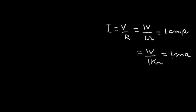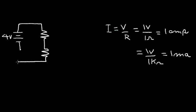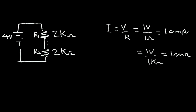A milliamp is a thousandth of an amp, but it's a unit that's much more useful in electronics. So let's talk about voltage dividers. Let's presume I have a four-volt battery and I want to divide this voltage into smaller units. I can do that by adding two series resistors. Let's call them R1 and R2, where R1 is two kilohms and R2 is also two kilohms.